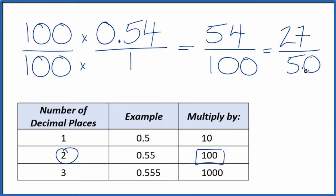If you divide 27 by 50, or 54 by 100, you'll get the decimal 0.54. It's just that these are in fraction form.